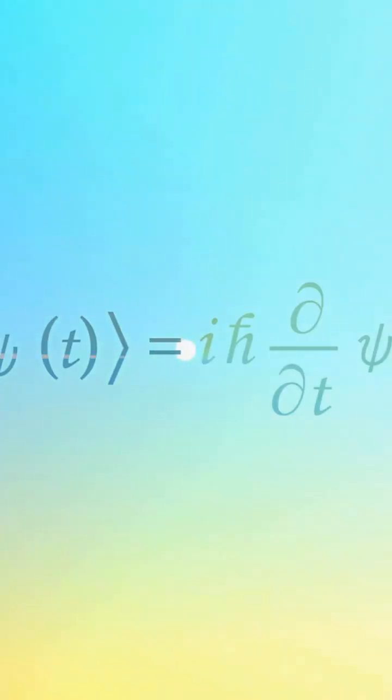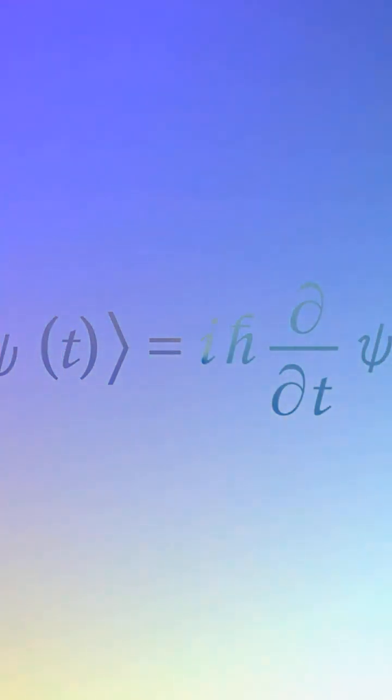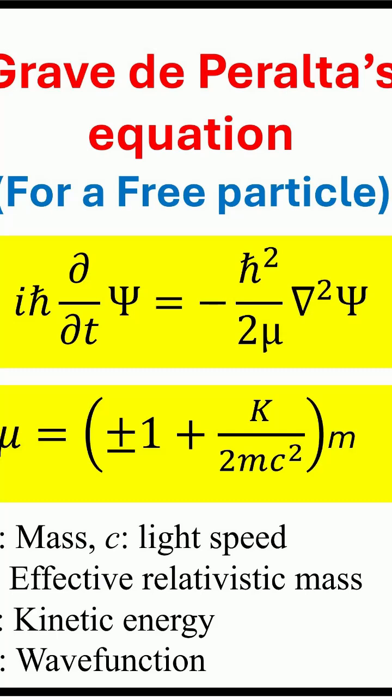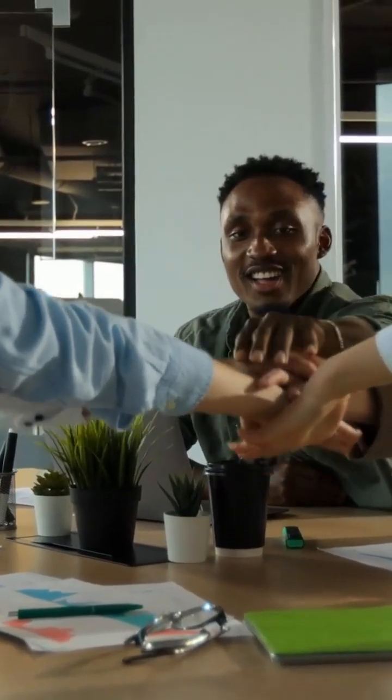We should add a comment about Grave de Peralta's equations. A century after Schrödinger's equation, Professor Grave de Peralta made a groundbreaking discovery. He found a pair of equations that unlock both common and exotic solutions to the Klein-Gordon equation. These equations resemble Schrödinger's, unifying relativistic and non-relativistic quantum mechanics.